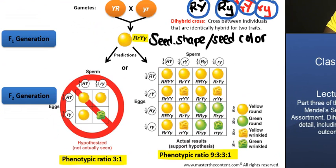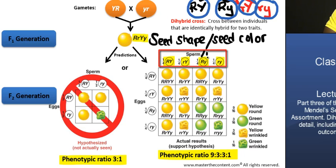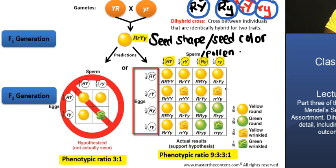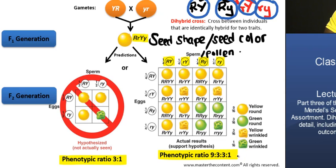If we place these gametes in a Punnett grid — with RY, Ry, rY, and ry — and cross a male from the F1 generation with a female of the same genotype, those four gamete genotypes in all combinations produce a phenotypic ratio of 9 yellow round, 3 green round, 3 yellow wrinkled, and 1 green wrinkled — a ratio of 9:3:3:1.